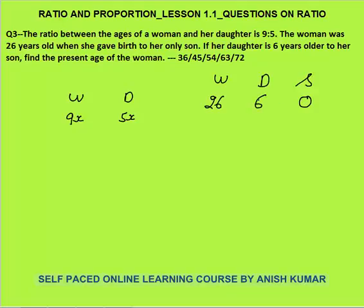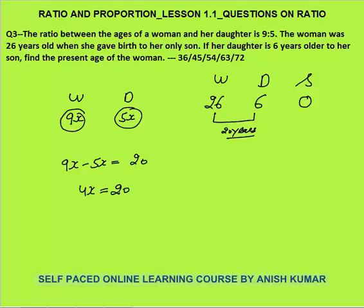The difference between the ages of any two persons is always the same. The difference between the woman's and daughter's age is 9x − 5x = 4x, which is always 20 years (since when daughter was 6, woman was 26, a difference of 20). So 4x = 20, giving x = 5. The present age of the woman is 9x = 9 × 5 = 45 years.